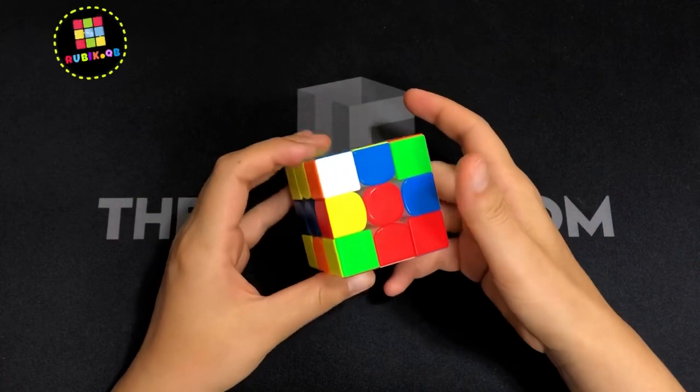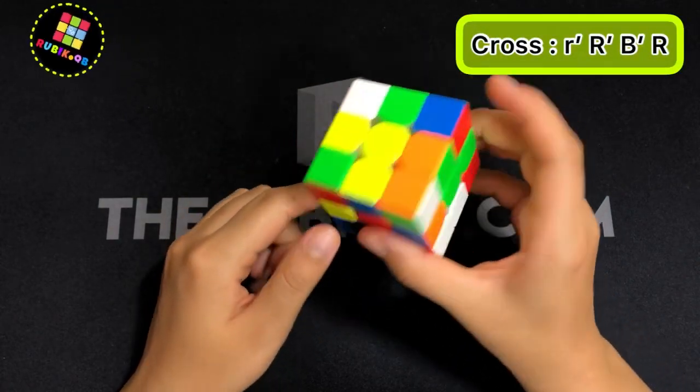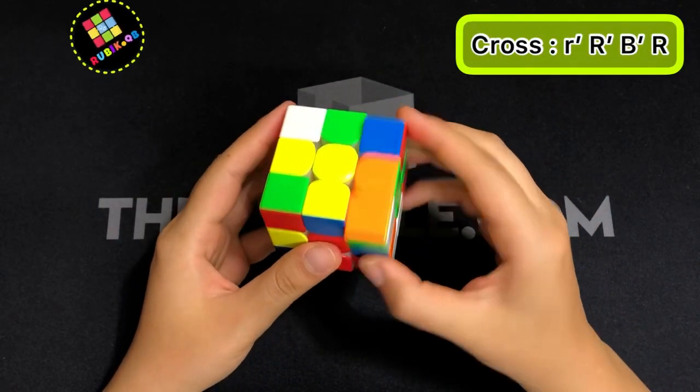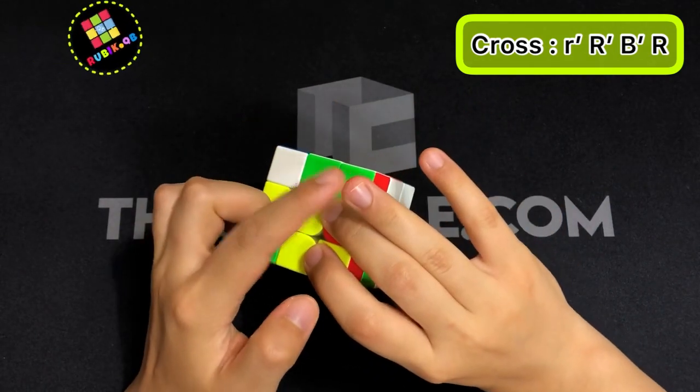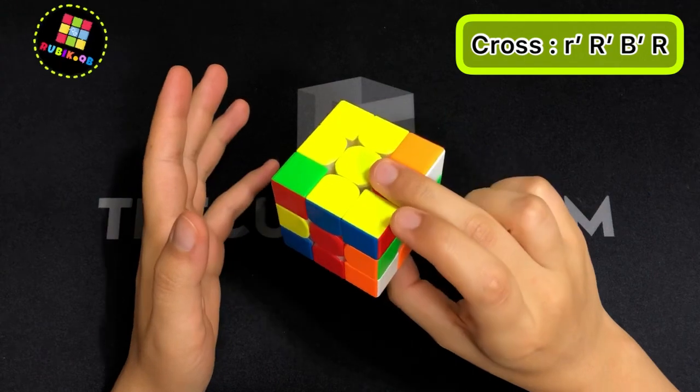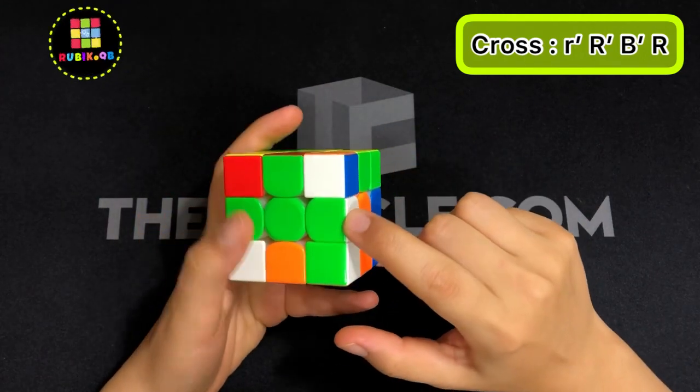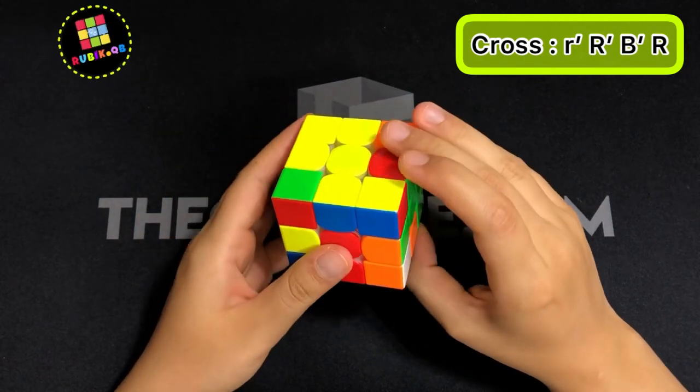So here he did wide R' and solved this one and then he did R' for connecting these two and here with his ring finger he did B' for connecting this cross edge to the center and then he did R.